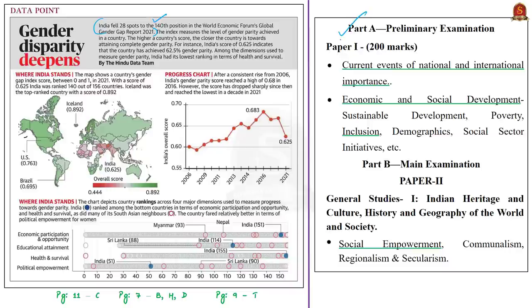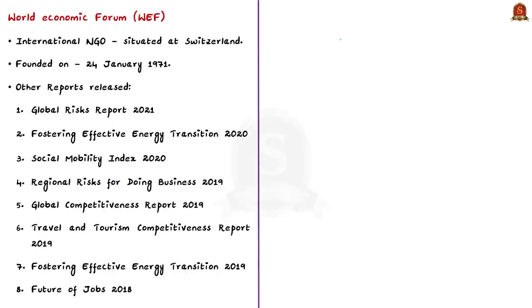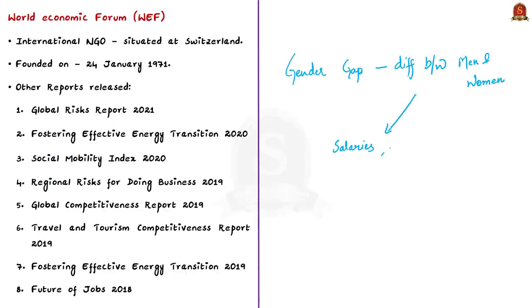First, what is gender gap? Gender gap is the difference between women and men as reflected in social, political, intellectual, cultural or economic attainments or attitudes. For example, the gap in economics refers to the difference between men and women when it comes to salaries and the number of leaders and participation in the workplace.